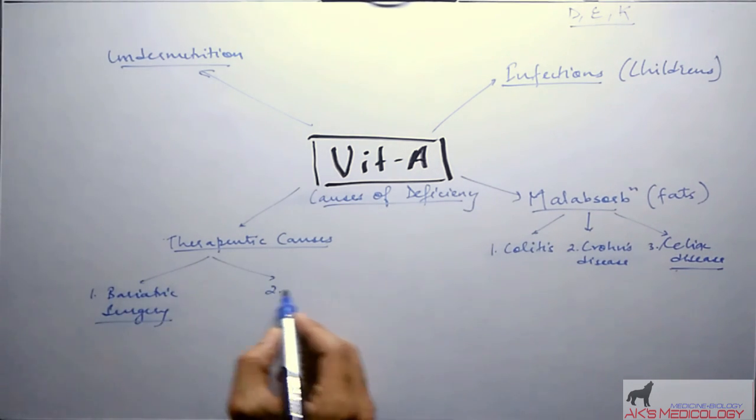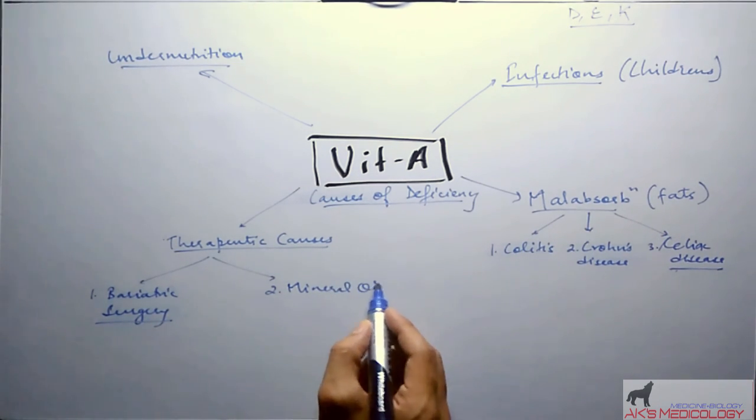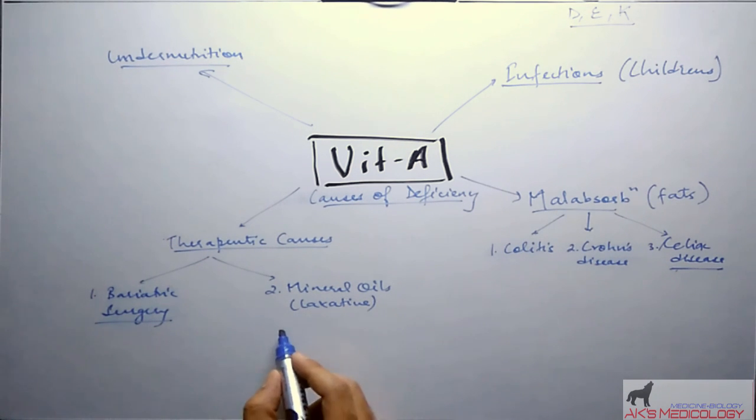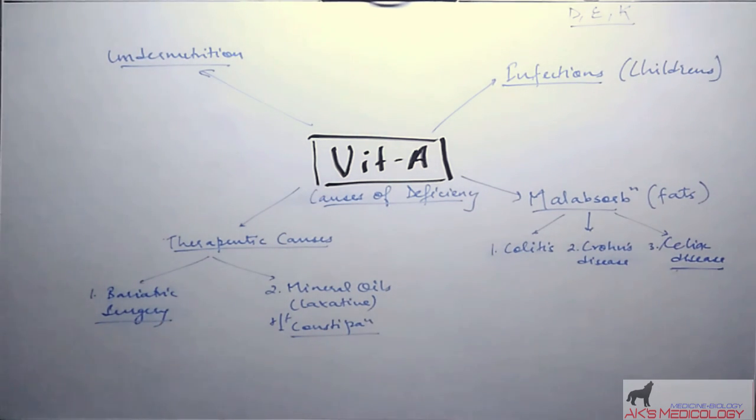Second is the use of mineral oils as laxative for the treatment of constipation. What this mineral oil does is they lubricate the walls of the GIT and hence enhance the passage of food, thereby decreasing their digestion and absorption which results again in malabsorption.